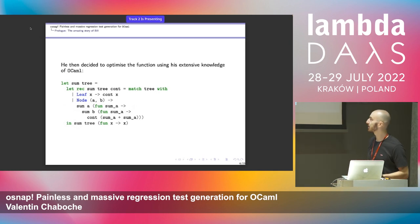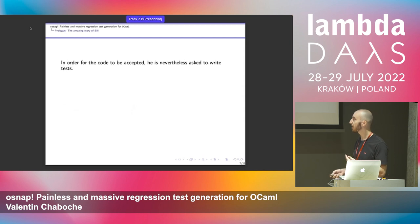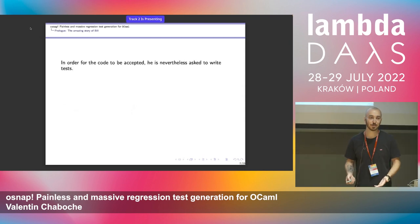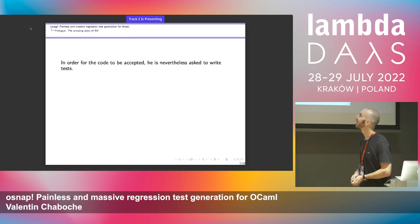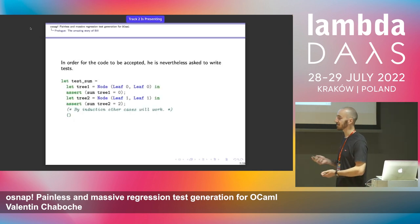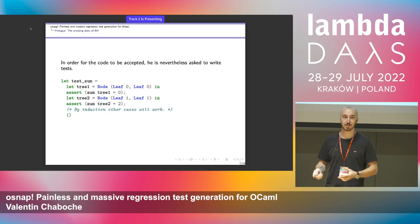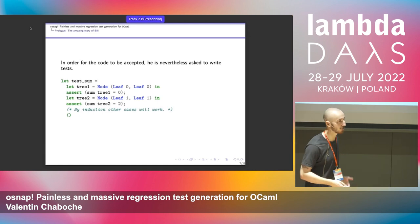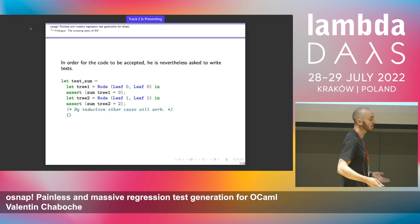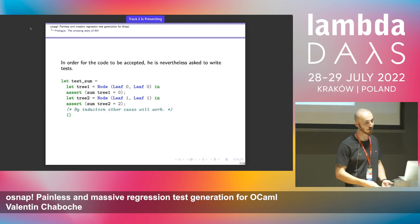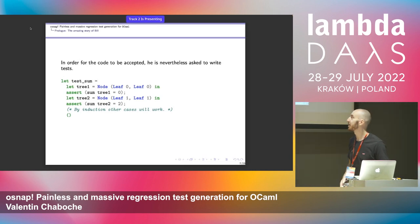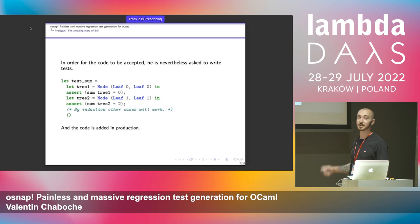He believes in the optimization and wants it added in production. But to do so, he is asked to write tests. So he writes some: the sum of a tree with two leaves of value zero is zero, two leaves of value one is two — and he says by induction other cases would work. People trust him, so the code is added in production.